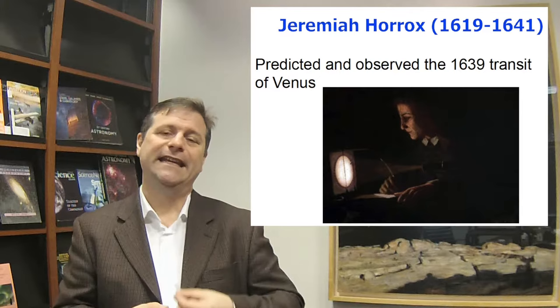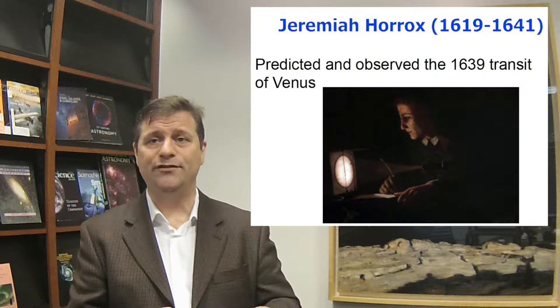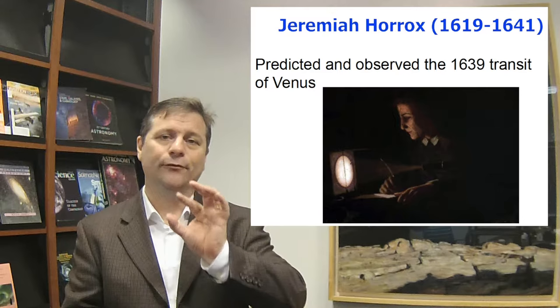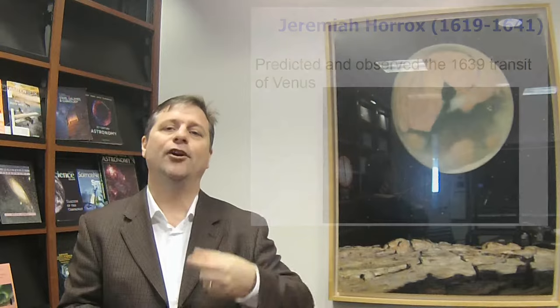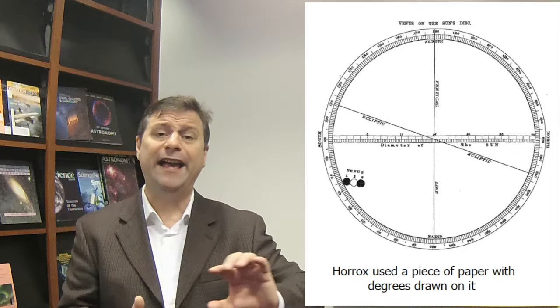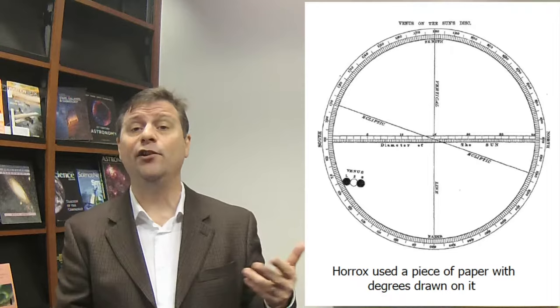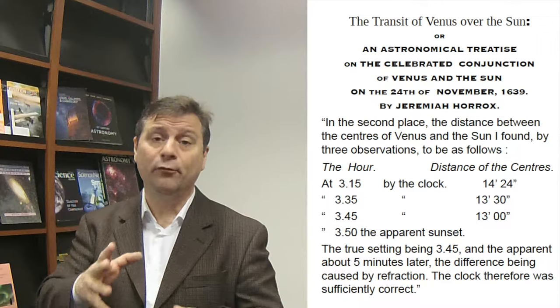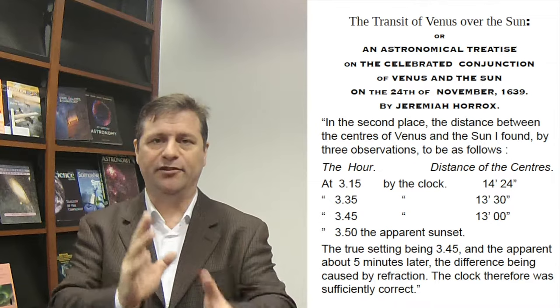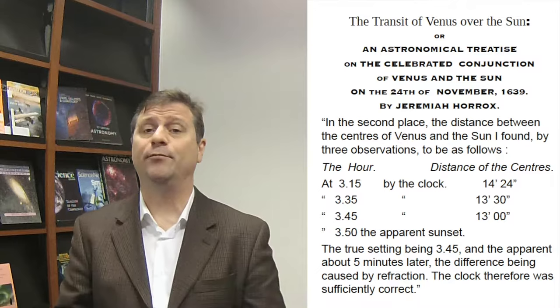And then comes in two years later, Jeremiah Horrocks. He utilizes Kepler's laws and realizes that Kepler made a prediction for a transit of Venus across the face of the sun or a near miss transit on December 4th. Jeremiah Horrocks goes back and looks at the mathematics of Kepler and determines there will actually be a full on transit of Venus on December 4th of 1639 at three o'clock in the afternoon local time.